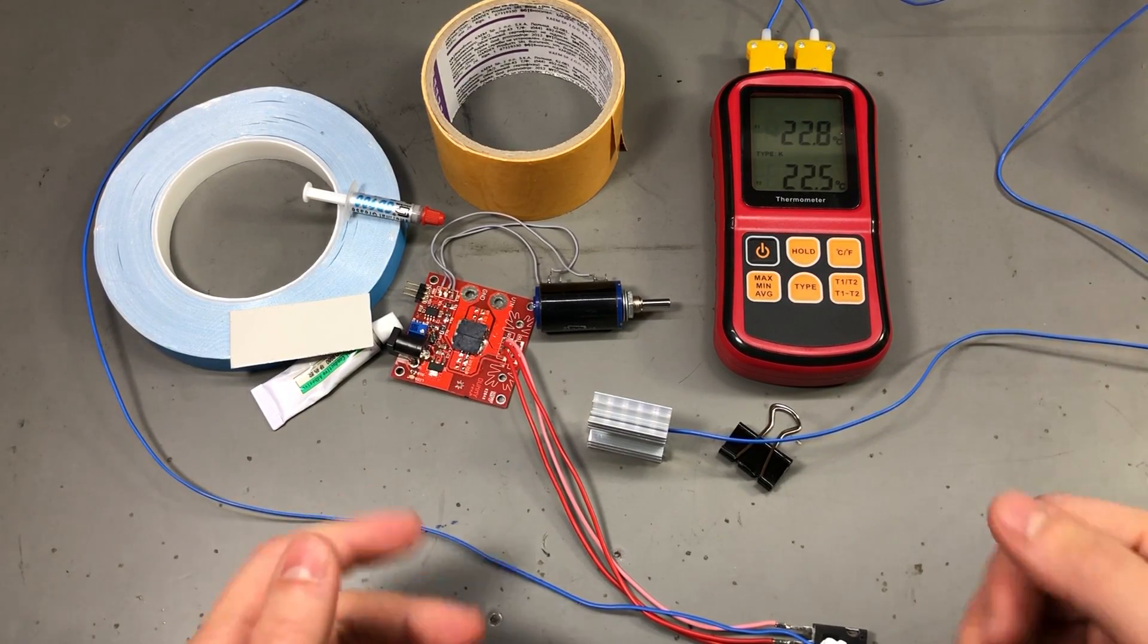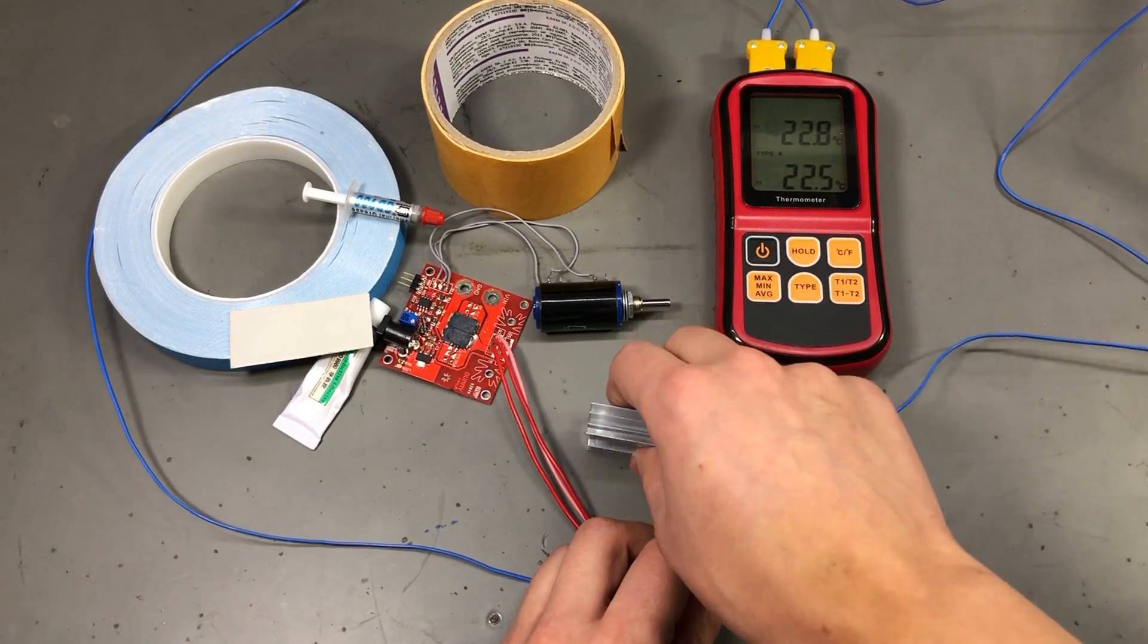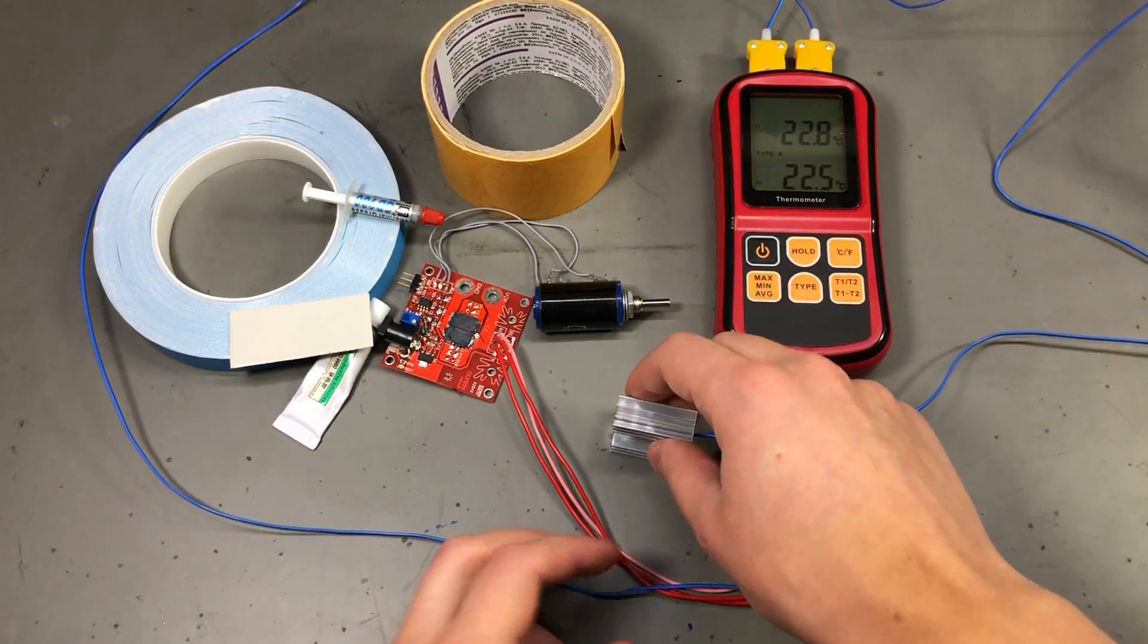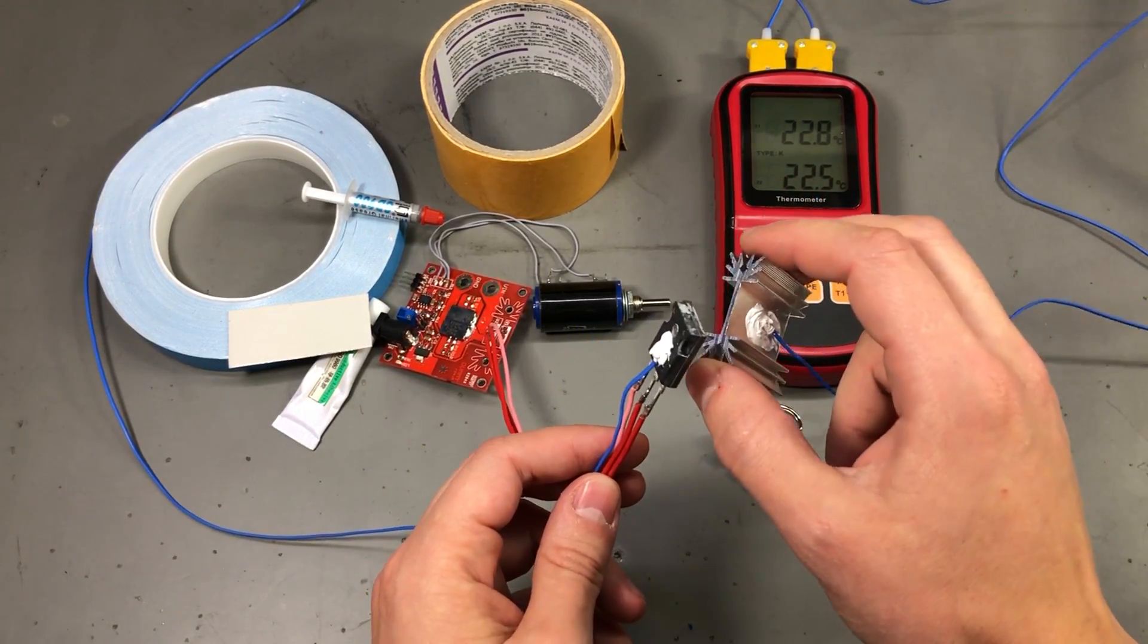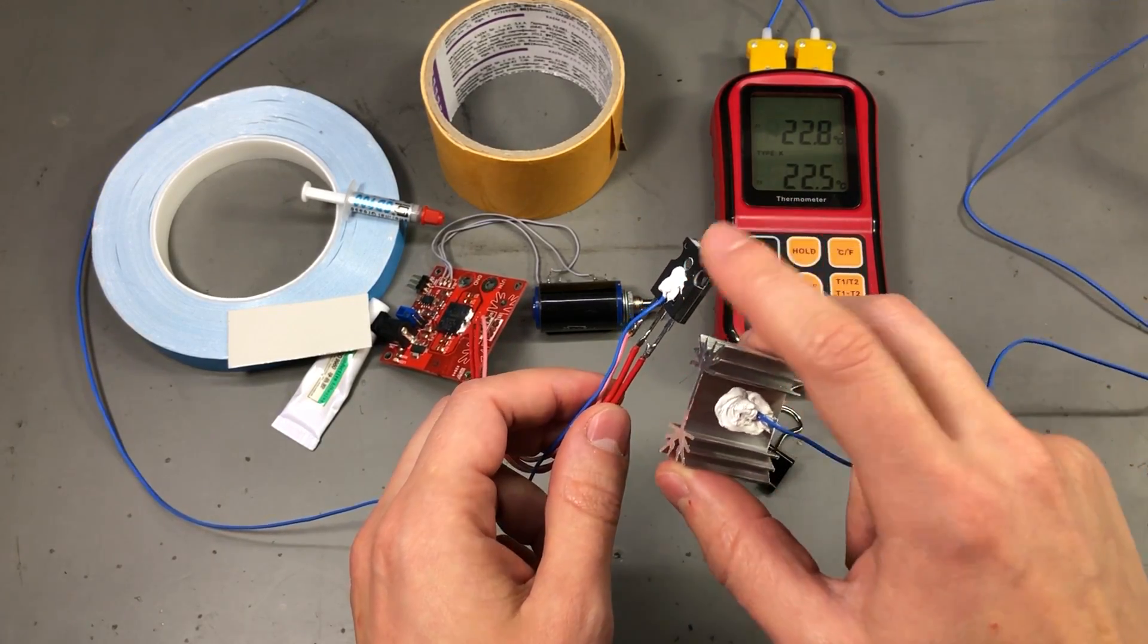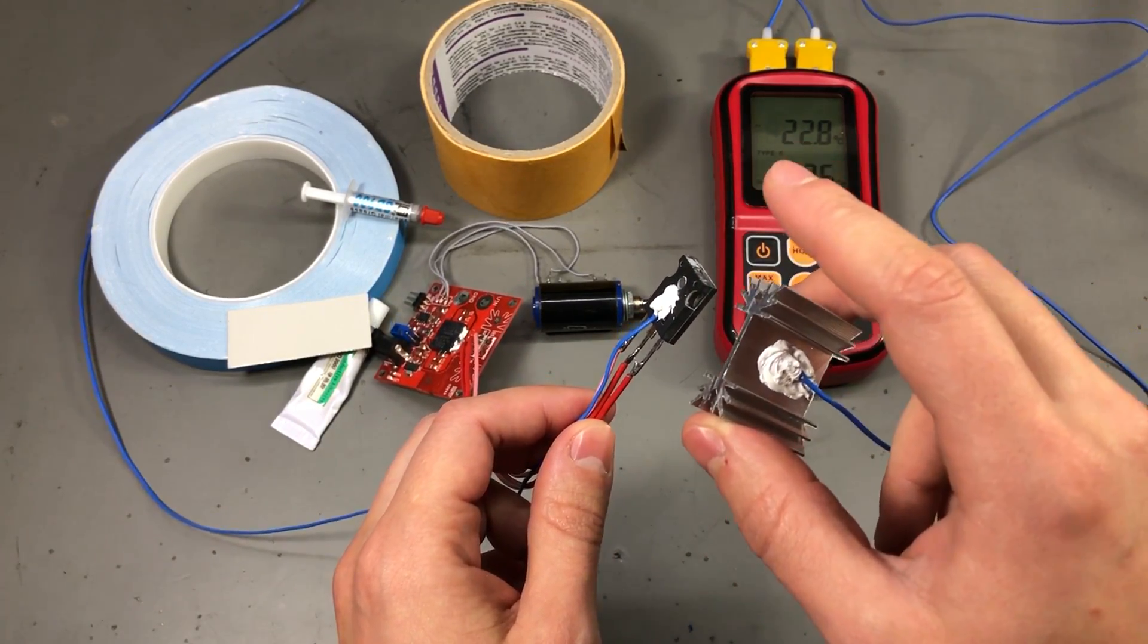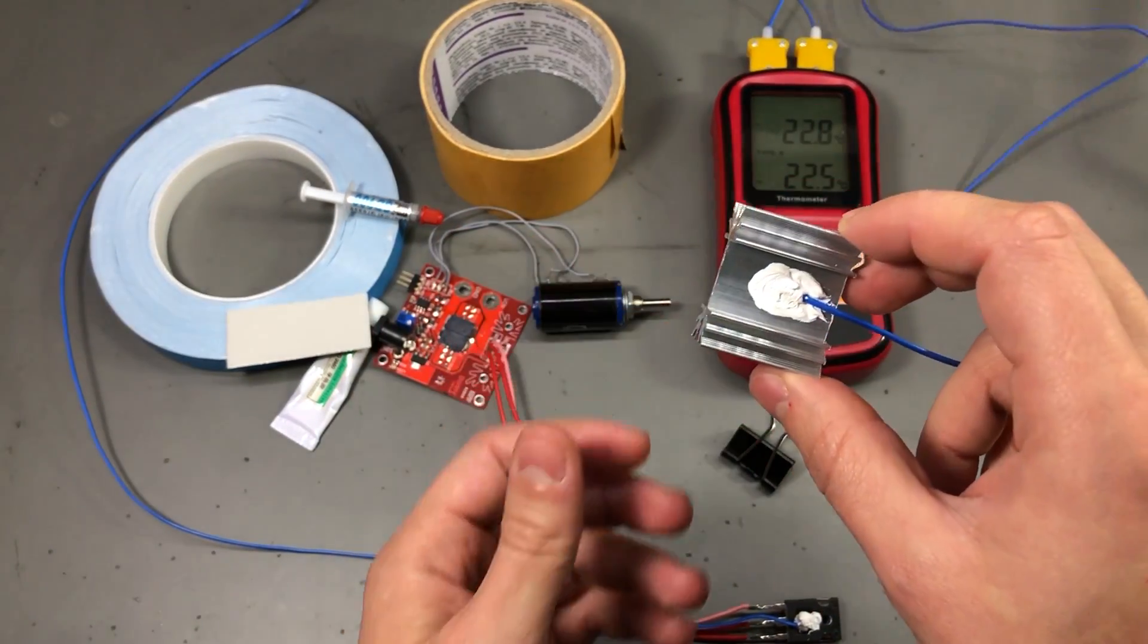Then we're going to be inserting the materials we're testing between the transistor producing the heat and the heat sink, and we're going to be measuring the temperature of the IC and the temperature of the heat sink at the same time. As you can see I have thermocouples glued to the top of the TO247 transistor and also on top of the heat sink.